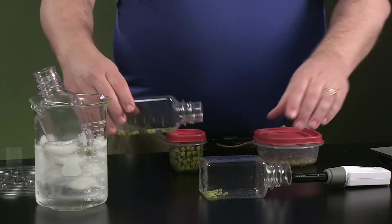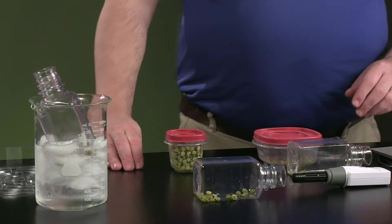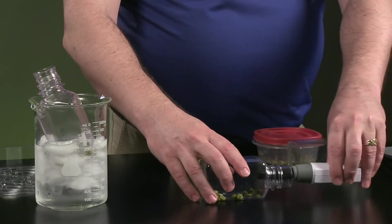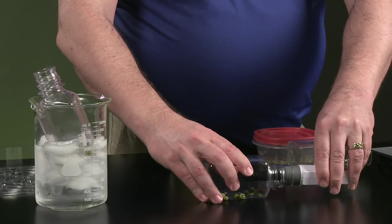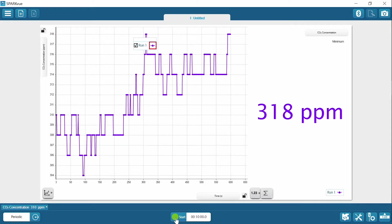Now what we're going to do is switch these dried peas and put a set of peas that have been soaking. We'll watch these for 10 minutes. This will be run two.